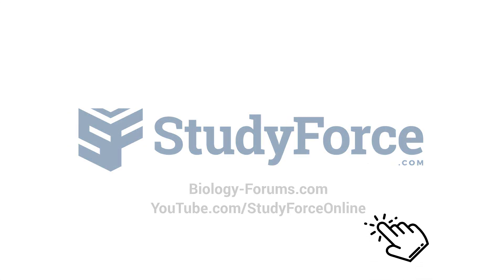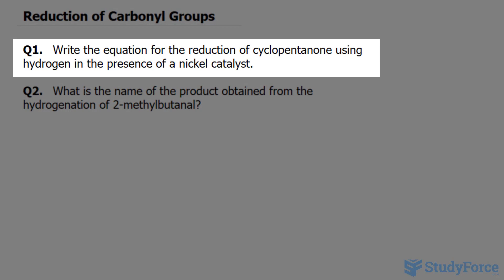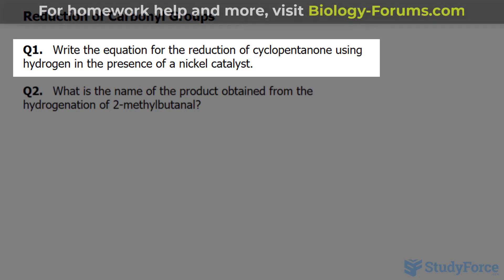In this tutorial, we'll be discussing what happens during the reduction of a carbonyl group. The question reads: write the equation for the reduction of cyclopentanone using hydrogen in the presence of a nickel catalyst.